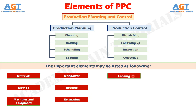Element No. 7: Loading. Machine loading is the process of converting operation schedules into practice in conjunction with routing. Machine loading is the process of assigning specific jobs to machines, men, or work centers based on relative priorities and capacity utilization. Loading ensures maximum possible utilization of productive facilities and avoids bottlenecks in production. It is important to avoid overloading or under-loading facilities, work centers or machines to ensure maximum utilization of resources.